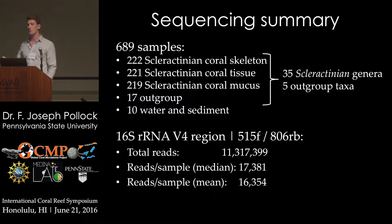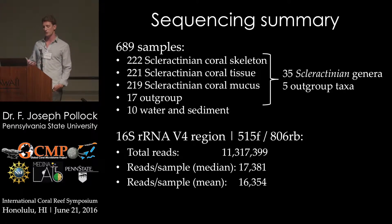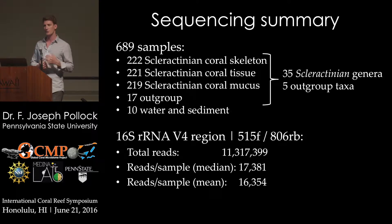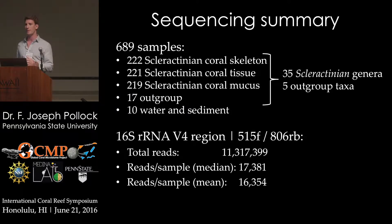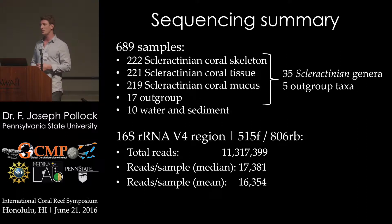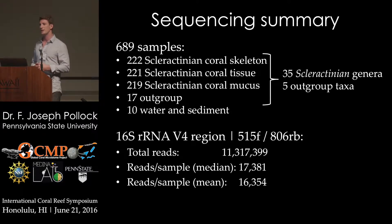Here's a summary of what we ended up with. We crossed those different compartments as well as some out-groups and some sediment and water. We amplified the 16S ribosomal RNA gene of the bacteria in the V4 region, and after quality control we ended up with over 10 million bacterial reads that averaged out to more than 16,000 reads per sample.